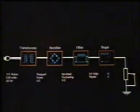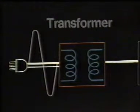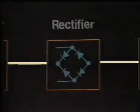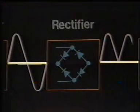A DC regulated power supply converts AC voltage to DC voltage using a transformer, rectifier, filter circuit, and a regulator circuit. The transformer normally steps the voltage down. The rectifier converts the alternating voltage to unidirectional voltage. This unidirectional voltage is also known as pulsating DC. The pulsating DC is then passed through a filter circuit which smooths out the variations or ripple.